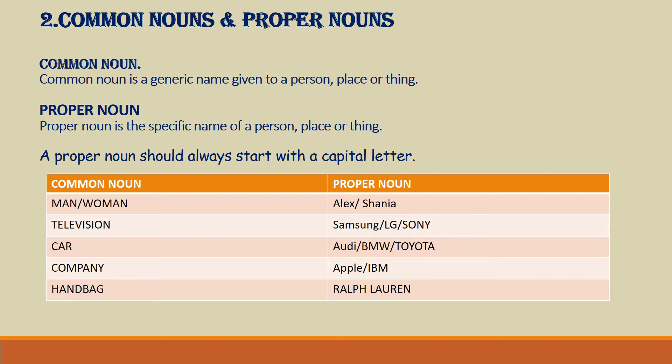Car is a common noun. The brand names Audi, BMW, Toyota are all proper nouns. Company is a common noun. Apple and IBM are all examples of proper nouns. Handbag is a common noun, and Ralph Lauren is a proper noun.